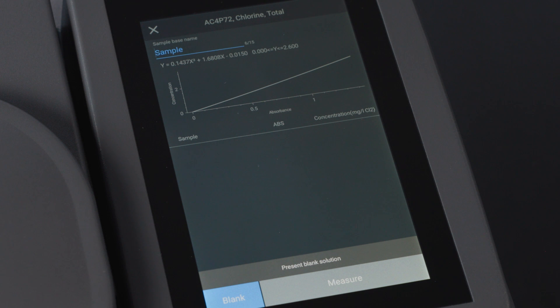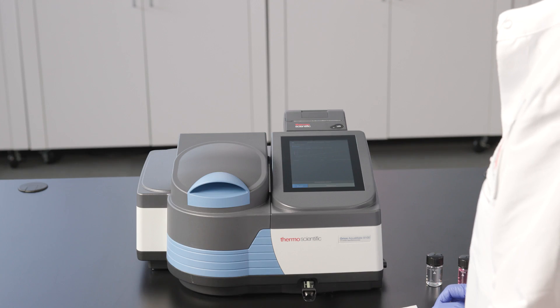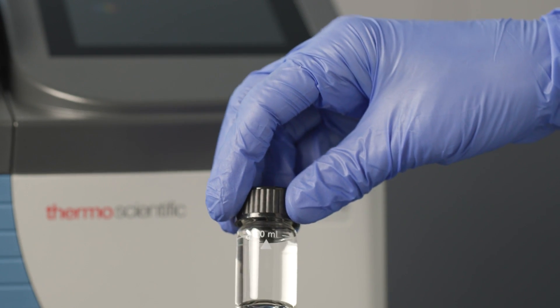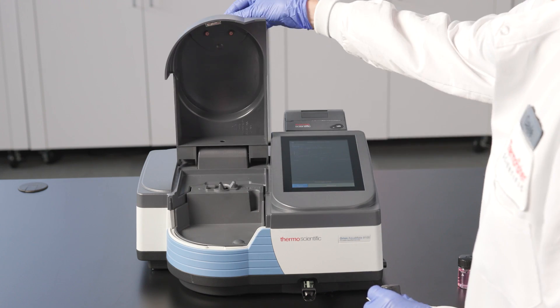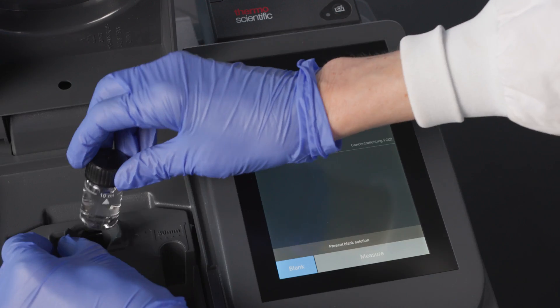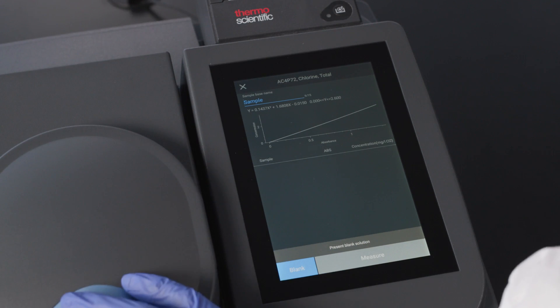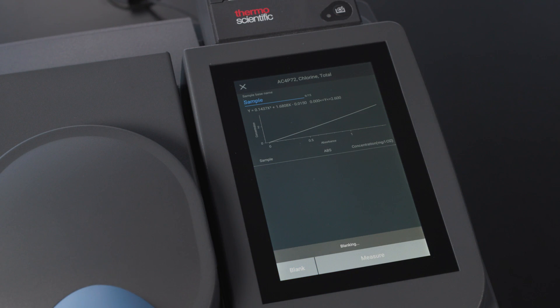This brings us to the measurement screen. As part of the measurement process, we first need to run a blank. In this case, it's 10 mils of our sample placed in a vial. All we need to do is open the cover, pull back the retainer, and insert the vial with the arrow aligned forward. Then we can close the lid and select blank. And in a couple of seconds, it will tell us that it's done.